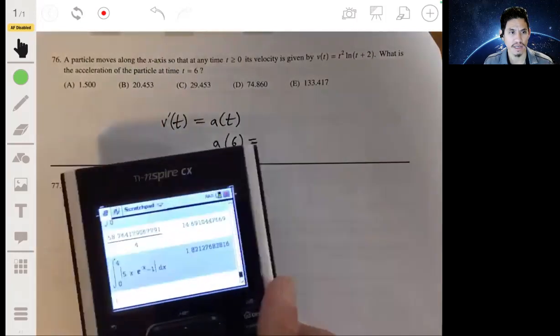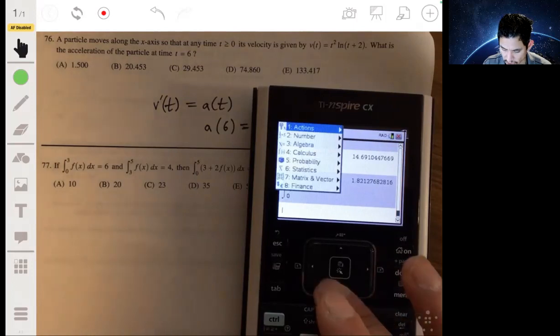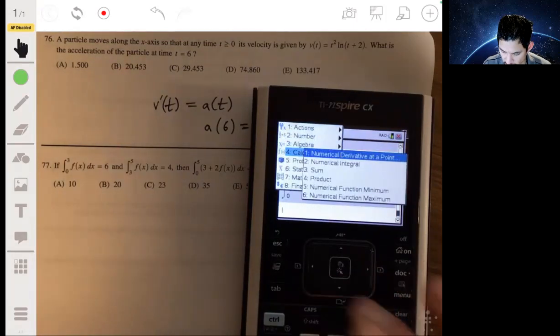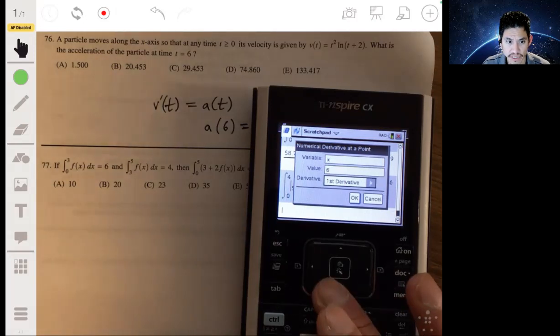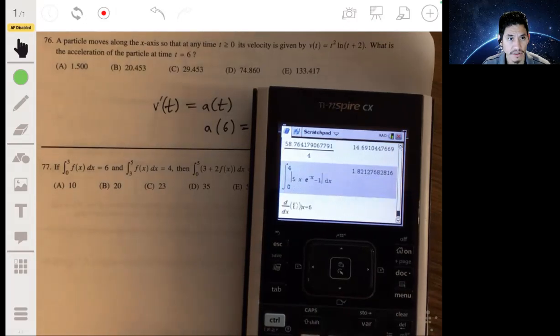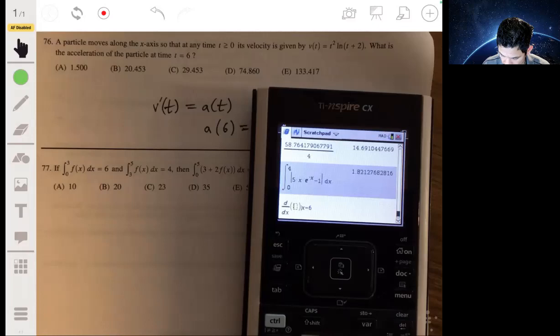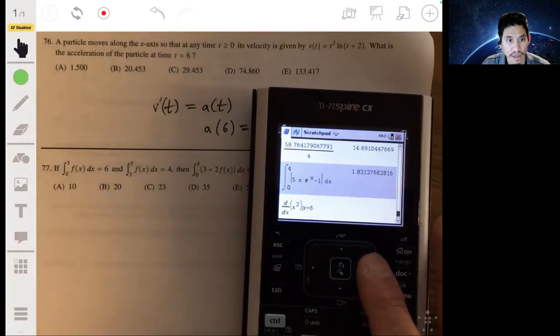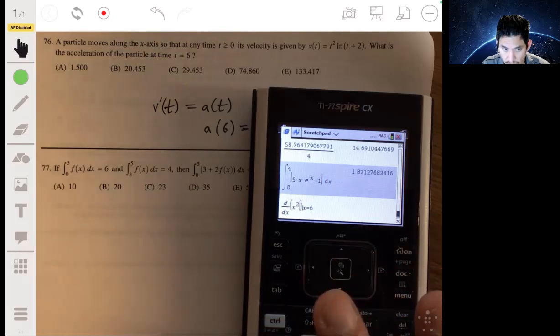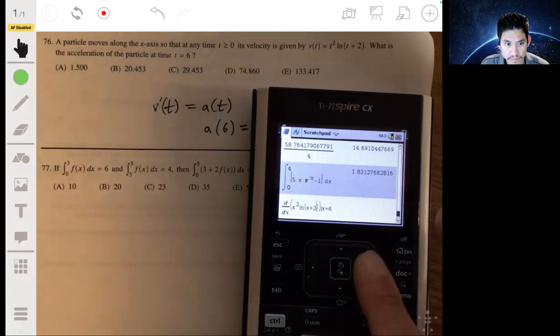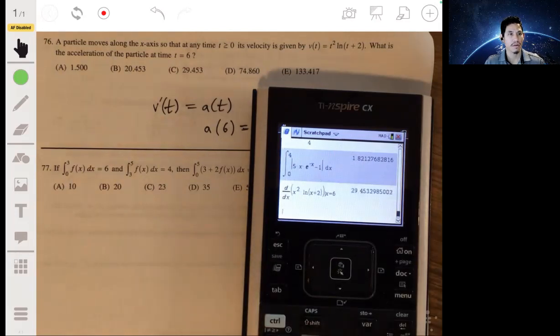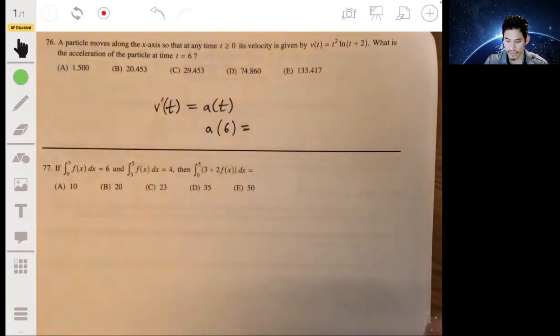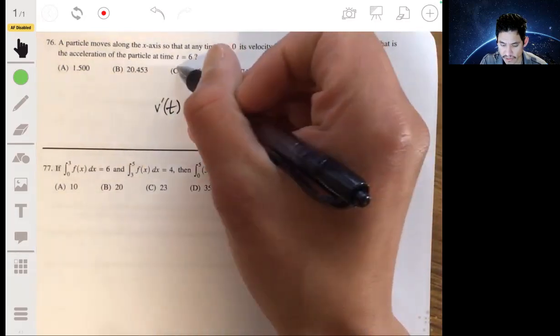So in here I go to the numerical derivative function at a point. The variable times x value is 6. Calculate the first derivative, enter my function: x squared and natural log of x plus 2. And bang, there you go. That's my answer. The answer is C, 29.453.